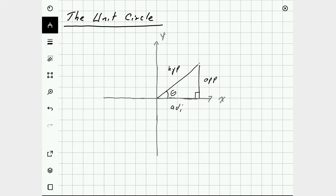But notice that if we have a point here, xy, the adjacent side of the triangle has a length of x, and the opposite side of the triangle has a length of y.